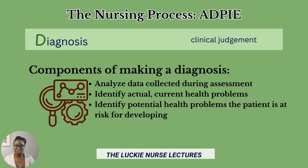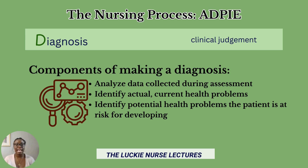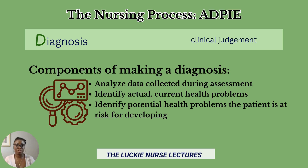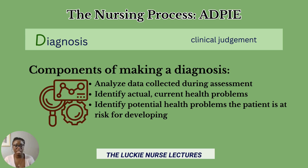Once the nurse collects data on the patient, they can analyze it to develop a nursing diagnosis. Diagnosing involves analyzing data gathered during assessment, identifying health problems and risks, and formulating a diagnostic statement about a patient's current or potential health problems. For example, if you notice a patient is coughing — objective data from the assessment — they could be at risk for a sore throat. Anything found in the assessment is used to critically think and create a nursing diagnosis in the second stage.